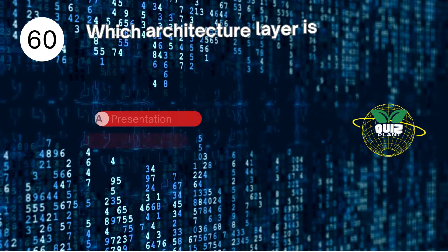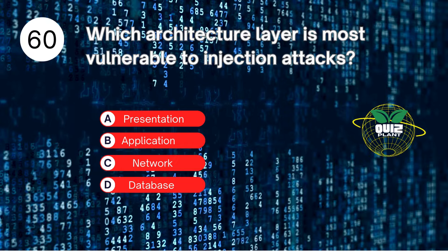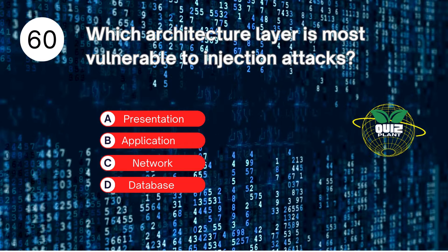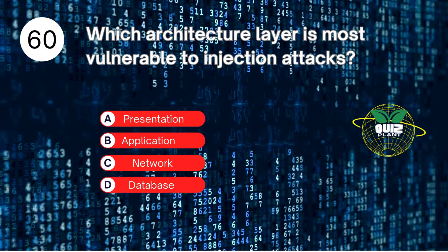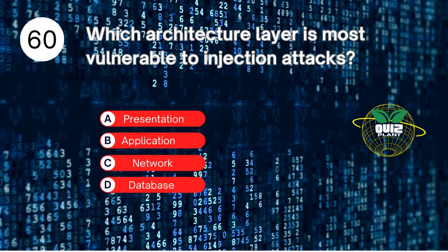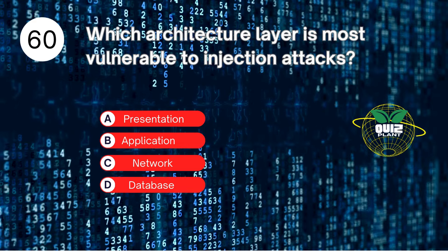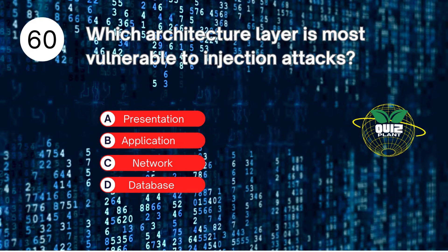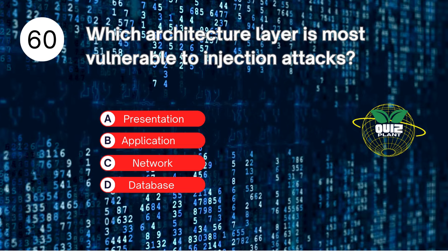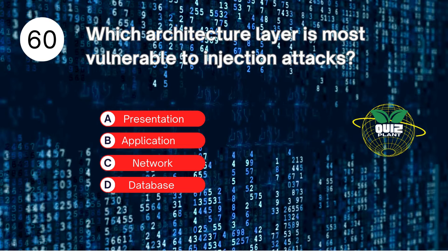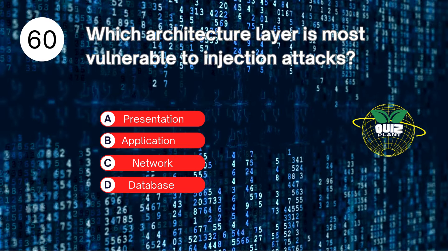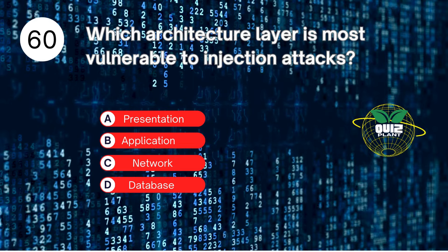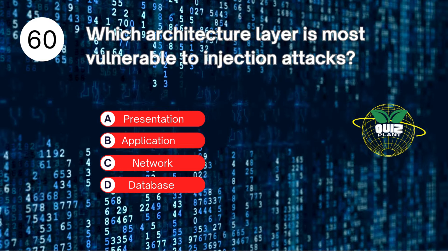Number 60. Which architecture layer is most vulnerable to injection attacks? A. Presentation. B. Application. C. Network. D. Database. The answer is D. Database.